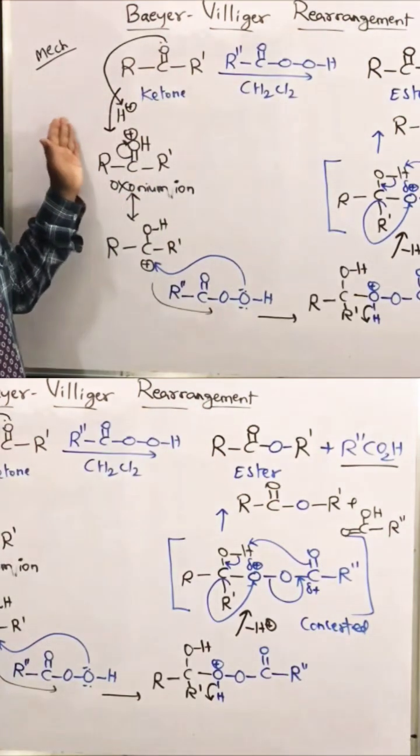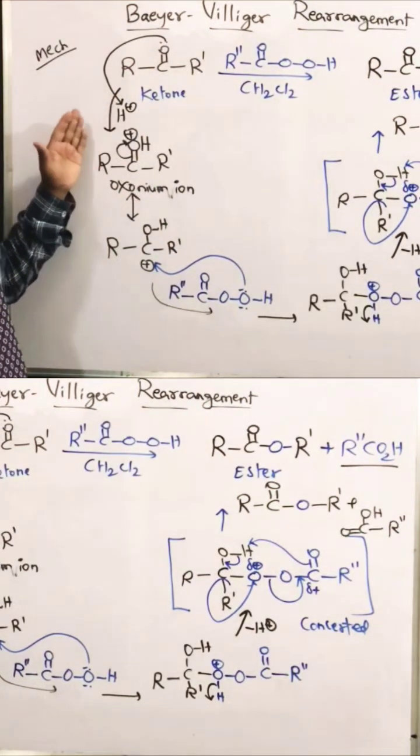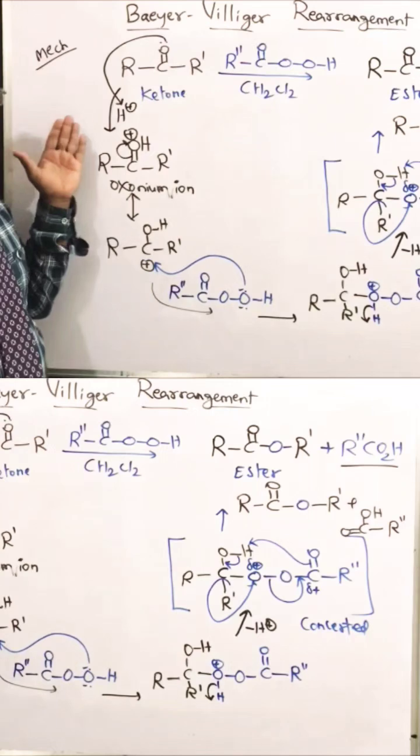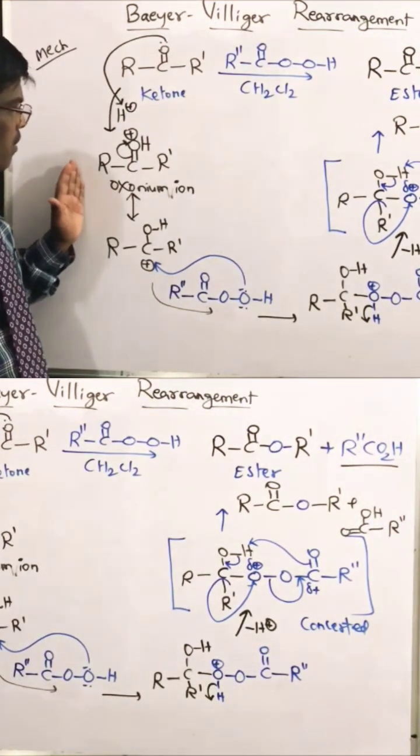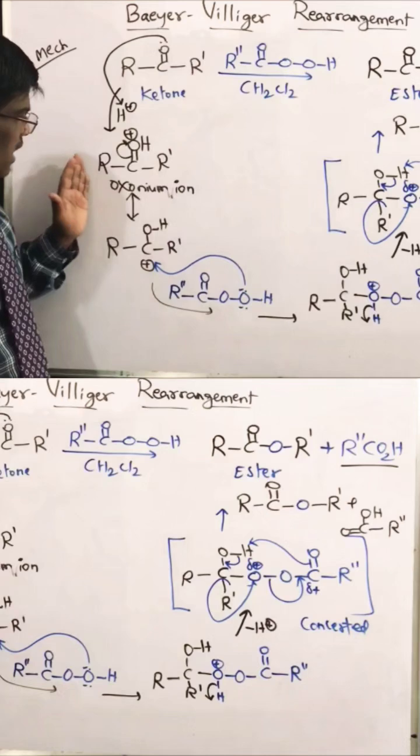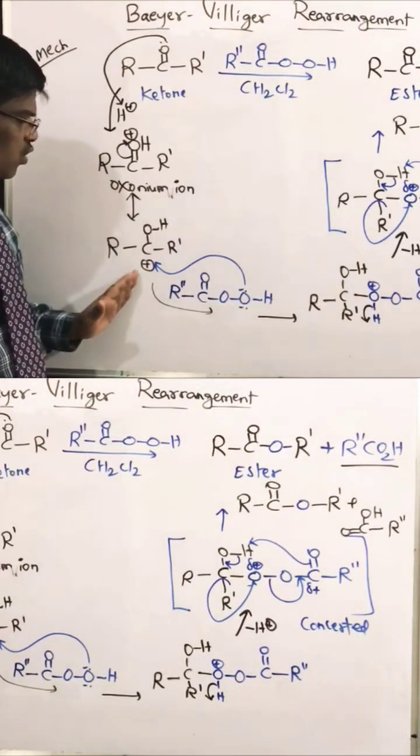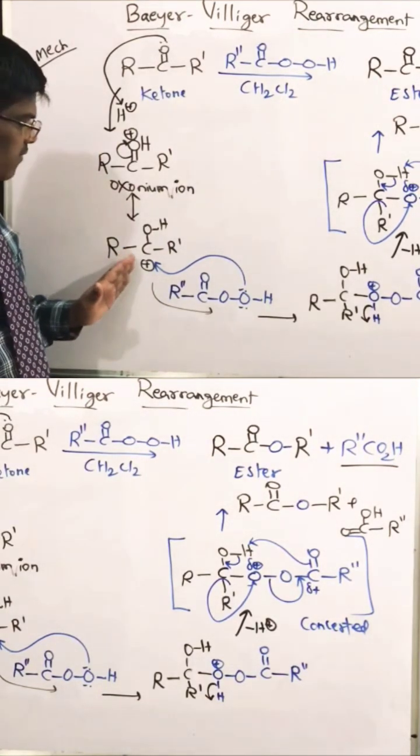The first step of this Baeyer-Villiger rearrangement is taking up of proton by ketone to give oxonium ion. The oxonium ion is this structure where I can write it in this way also, where it is going to have carbon with a cation.